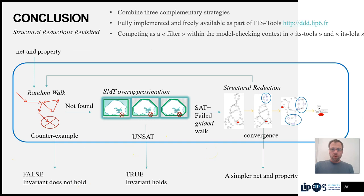So to conclude, we present the three methods and assemble them within a workflow that has this kind of structure. First we start from the net and property. We try this random walk under-approximation. If we're lucky and we hit a counter-example, we know the invariant does not hold.